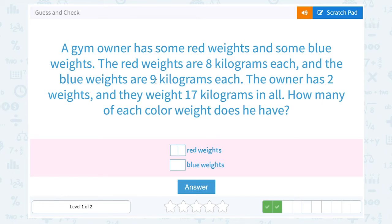A gym owner has some red weights and some blue weights. The red weights are eight kilograms each, and the blue weights are nine kilograms each. The owner has two weights and they weigh 17 kilograms in all. How many of each color weight does he have?